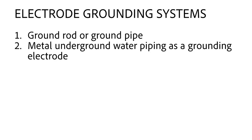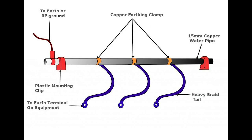Next is the use of metal underground water piping as a grounding electrode. It is required that this pipe be in direct contact with the soil for at least 10 feet. It is also required that a supplementary ground rod be used with this type of system in order to meet NEC requirements.